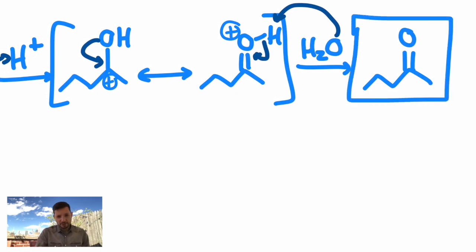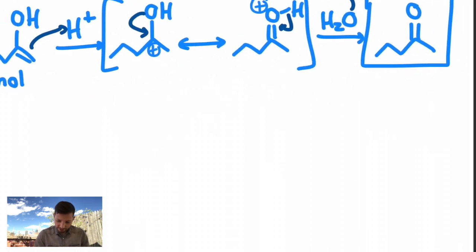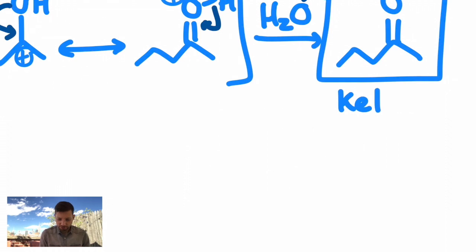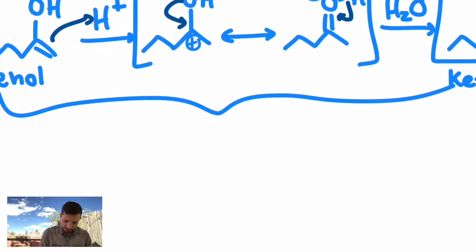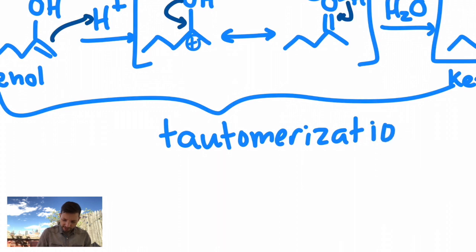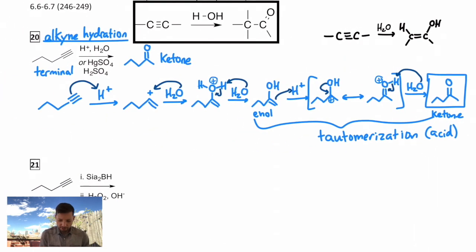Now that transformation, that overall rearrangement from enol to a carbonyl, in this case a ketone, is such a well-known transformation we give it its own name. Just this part is called a tautomerization. It tautomerizes. This is an example of this happening in acid and we'll see another one in base in just a moment. But overall it looks like a Markovnikov addition of H and OH across the alkene. It just doesn't stay put as the enol that rearranges. So that's the Markovnikov version. What's the non-Markovnikov version?